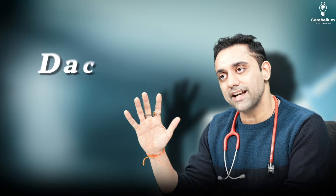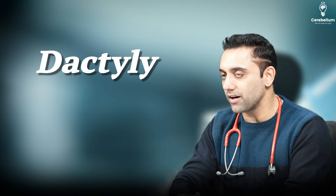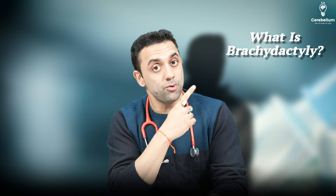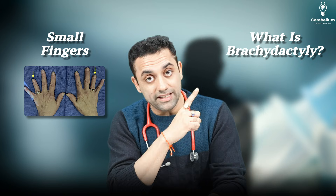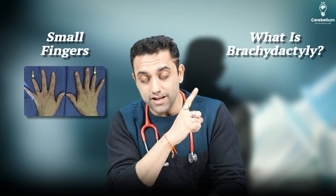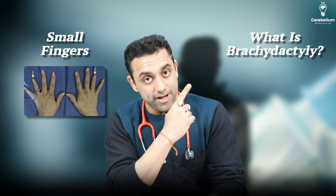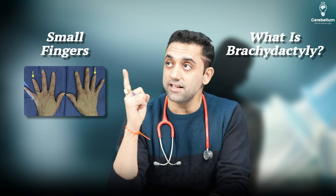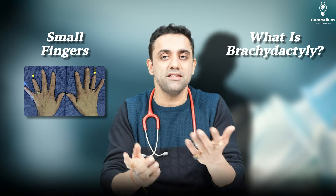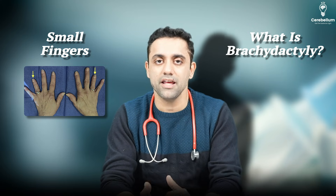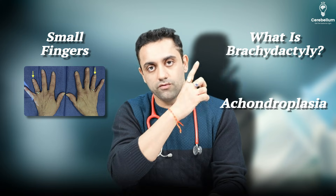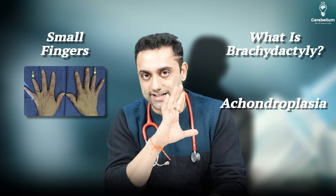My HOD always used to say that common things are common and rare things are rare. It's a very common topic. Number one: what is Brachydactyly? Brachy means small and Dactyly means fingers — so Brachydactyly is nothing but small fingers, which can be seen for example in a case of Achondroplasia.